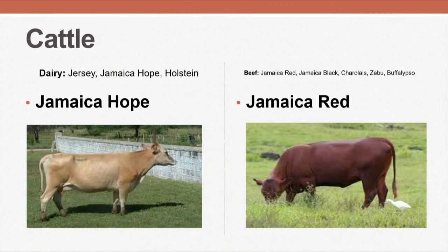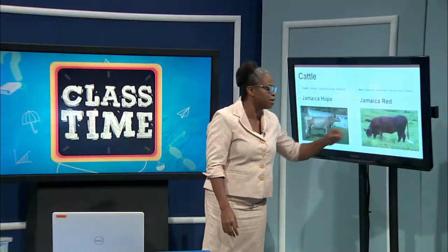For our cattle, we have the Dairy breeds and the Beef breeds. An example you are seeing there now is the Jamaica Hope. This breed was developed by Dr. T.P. Leckie. Other dairy breeds you are seeing are the Jersey and Holstein. And then we have a beef breed, the Jamaica Red, that you are seeing on the screen now.